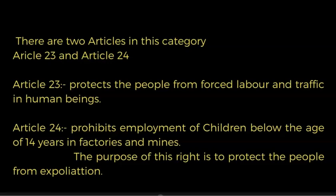There are two articles in this category of rights: Article 23 and Article 24. Article 23 protects people from forced labor and trafficking in human beings. Article 24 prohibits the employment of children below the age of 14 years in factories and mines. The purpose of this right is to protect people from various kinds of exploitation.